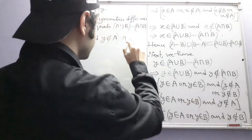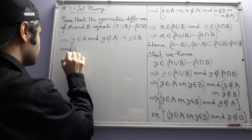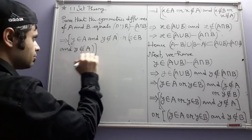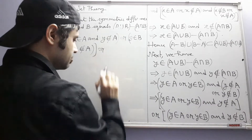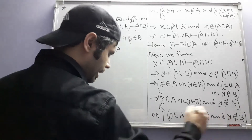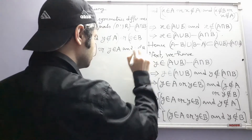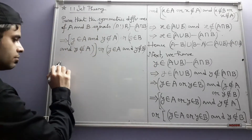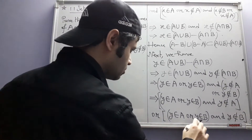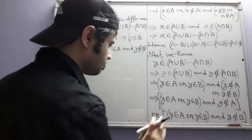Y belongs to B and Y does not belong to A — this is our first statement — or Y belongs to A and Y does not belong to B. Don't confuse between these 'and's and 'or's; they should appear in their proper places, otherwise we won't get anything.